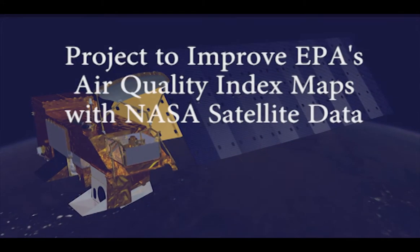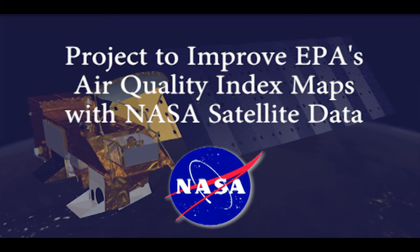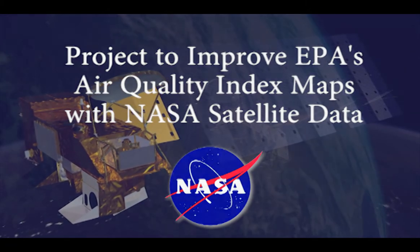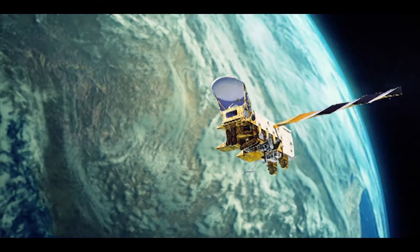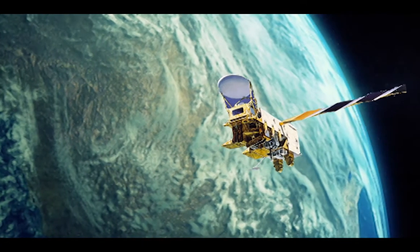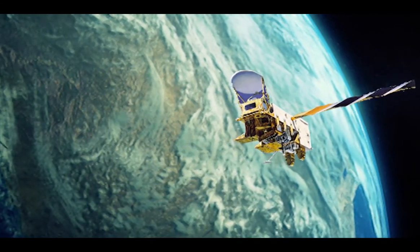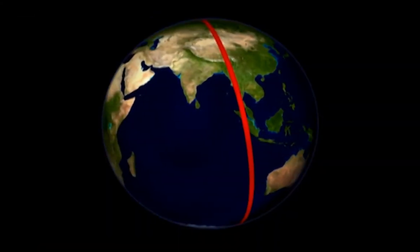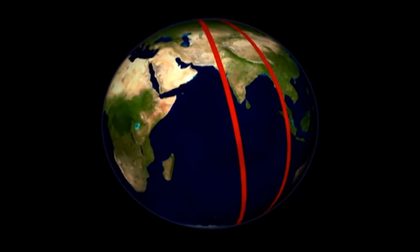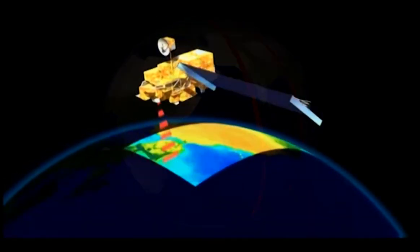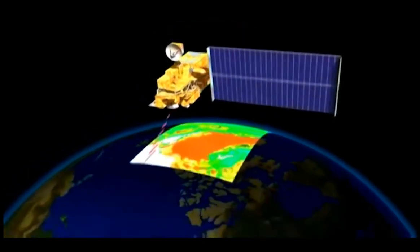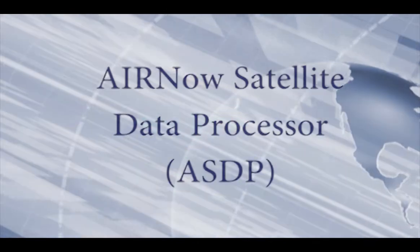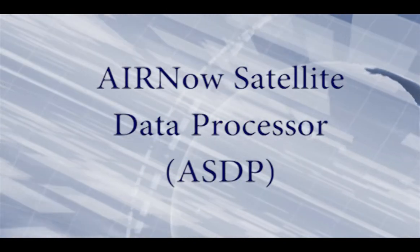The NASA-funded project to improve EPA's Air Quality Index maps with NASA satellite data began in 2009. The main objective of this project is to use NASA satellite data to enhance estimates of ground-level pollution concentrations through the development of the AirNow Satellite Data Processor, or ASDP.